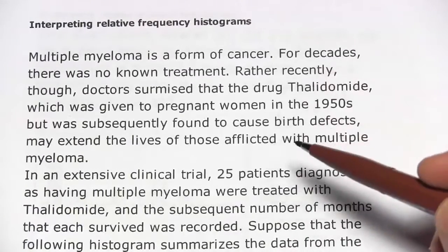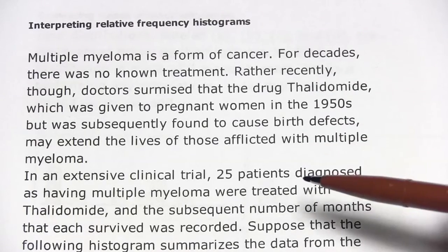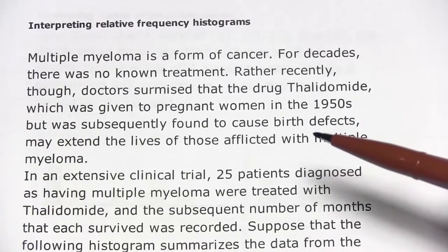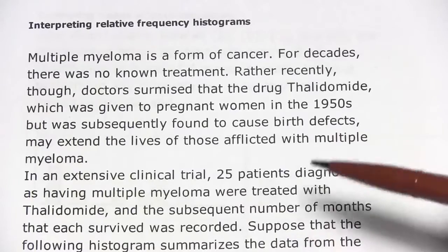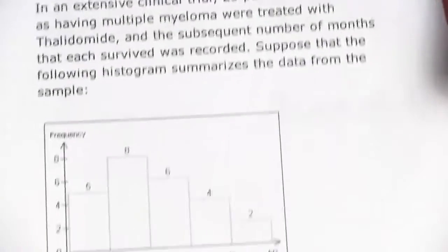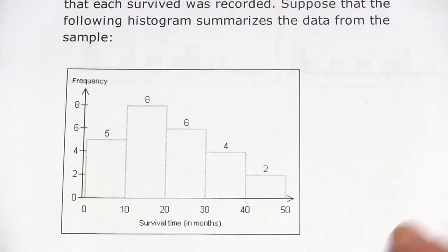This is some data about patients who were given a certain drug because they had a certain type of cancer and then how long they survived on that drug treatment. And it's a pretty terrible cancer, so survival times are not great.